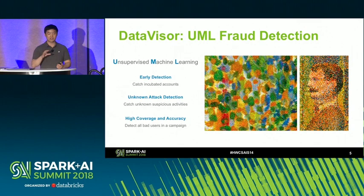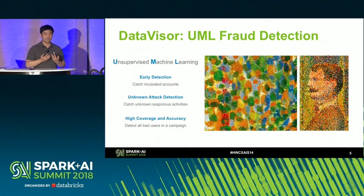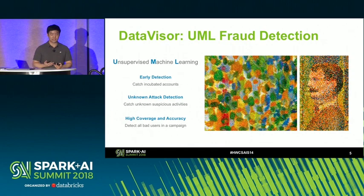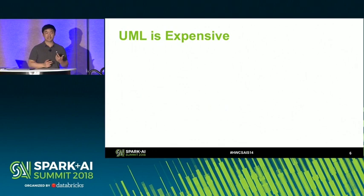Because of that, it achieves many benefits — for example, early detection: we can detect malicious behavior even in the incubation period. It can also adapt to unknown attack behaviors that have never appeared before, and we can achieve very high coverage and accuracy. There are two sides of a coin though. If I were to describe the drawback of unsupervised machine learning in one word, it would be expensive — or more accurately, super expensive.